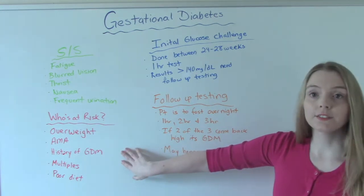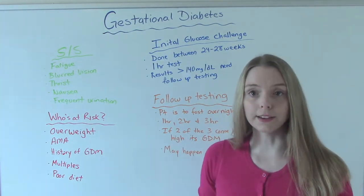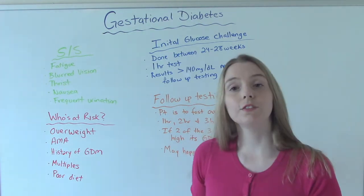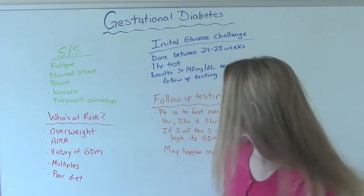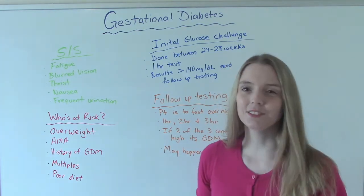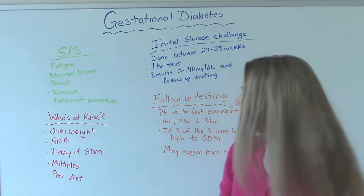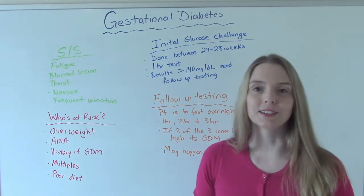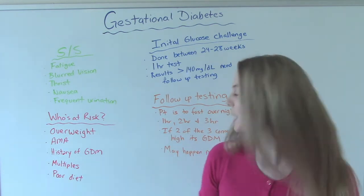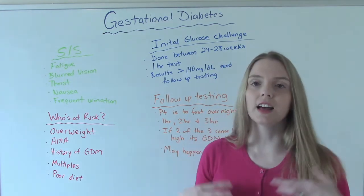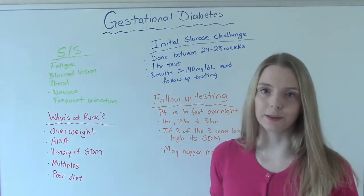Who's at risk for gestational diabetes? Anybody who's overweight or obese, women of advanced maternal age which is over the age of 35, if they have a history of gestational diabetes it's more likely to happen again, if they have multiples — twins, triplets, quads — the more babies in there the higher your risk, and if they have a poor diet and eat a lot of unhealthy foods, they are at risk for gestational diabetes.